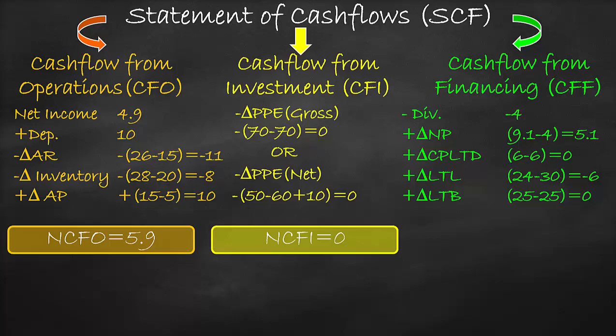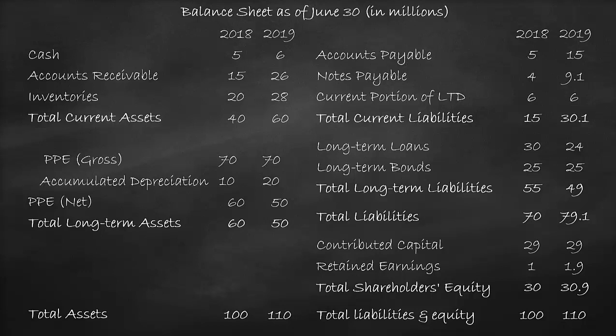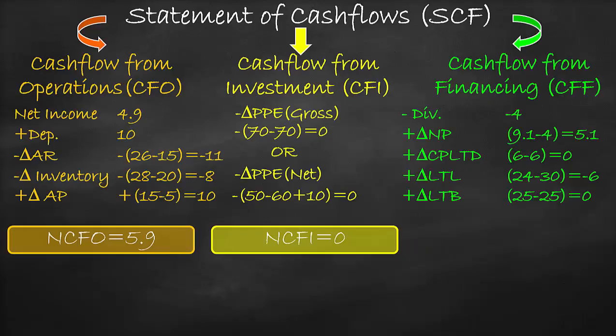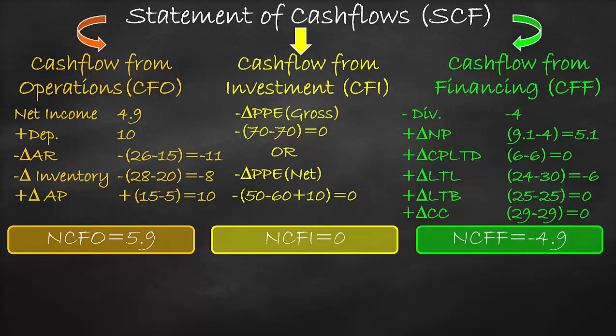Then we include a positive change in equity. We use a positive sign because there is a positive relationship between the change in equity and the change in cash. We include only the change in contributed capital and do not include the change in retained earnings, as retained earnings is part of net income — already included under cash flow from operations — so including it would be double counting. Change in contributed capital: (29 million minus 29 million) equals zero. Net cash flow from financing is the sum: negative $4 million plus $5.1 million plus zero minus $6 million plus zero plus zero, which equals negative $4.9 million.